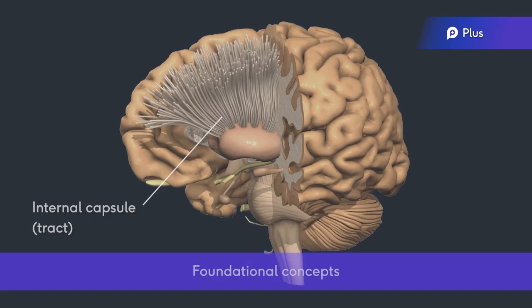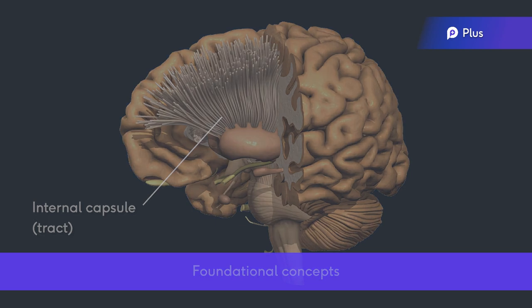Within the central nervous system, groups of nerve fibers form bundles, and bundles form tracts, or fasciculi. We can think of them as roads of communication.